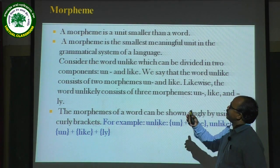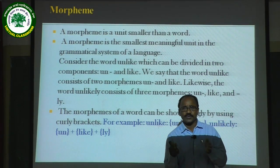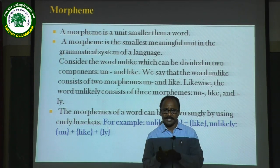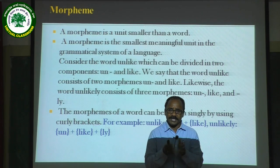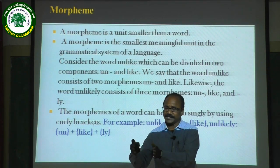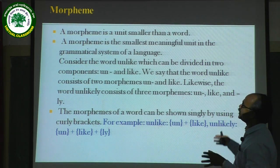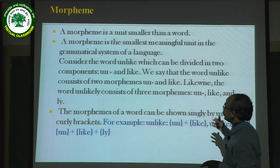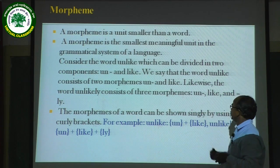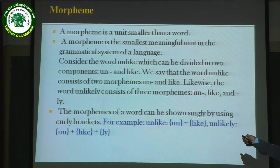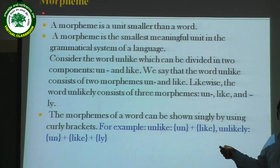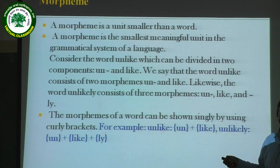For example, look at the word 'unlike.' This word is made up of two morphemes: the first is 'un' and the second is 'like.' 'Un' is a prefix and 'like' is a word. When you separate them you get two morphemes. Likewise, the word 'unlikely' has three morphemes: 'un,' 'like,' and 'ly.' So 'un' is a prefix, 'like' is another morpheme, and 'ly' is a suffix.